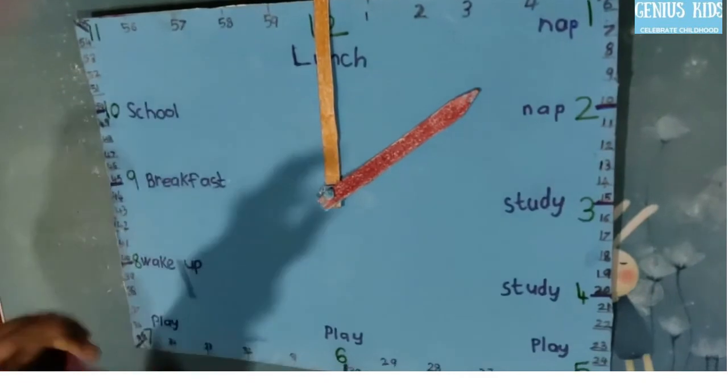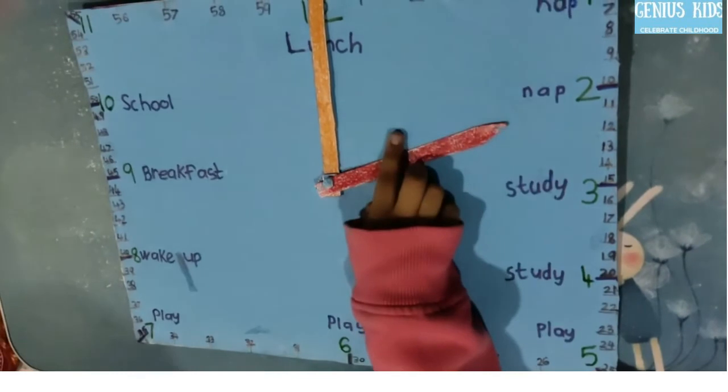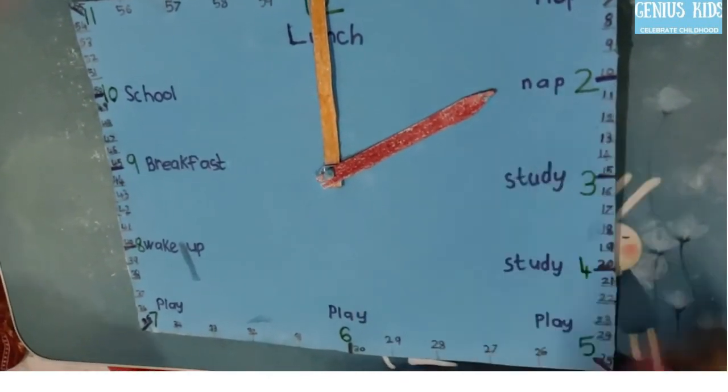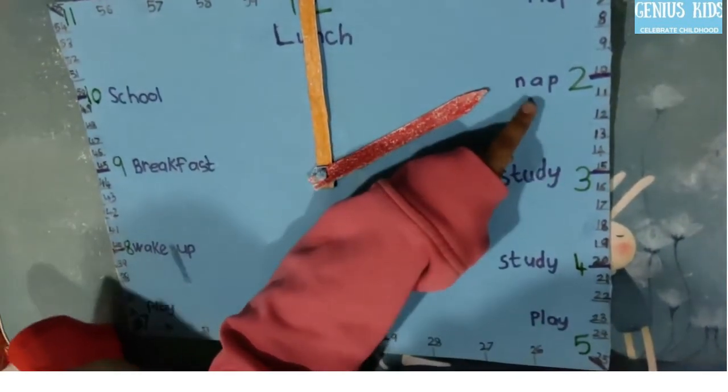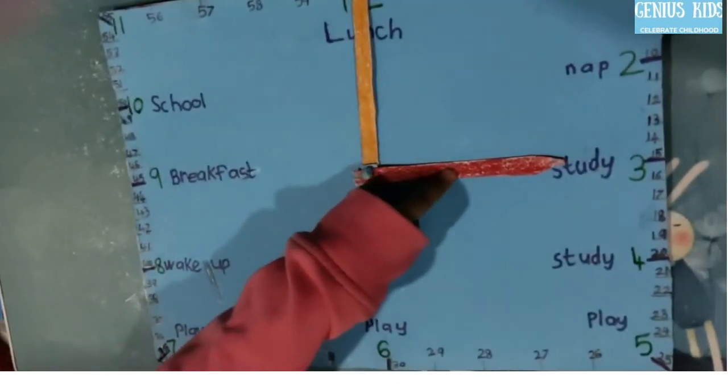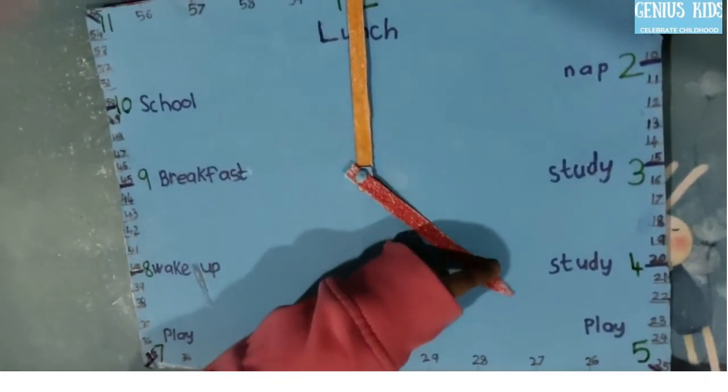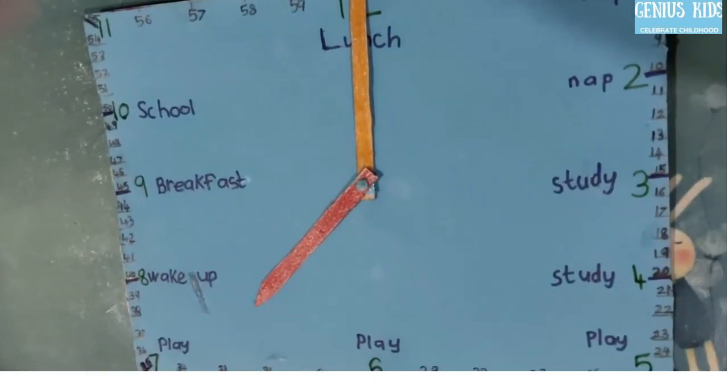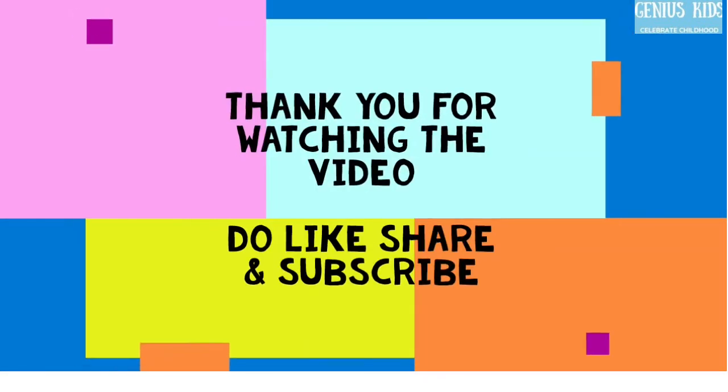Then nap. What is the time? 1 o'clock. Yes. Then time? 2 o'clock. What should you do? Nap. Yes. Next. 3 o'clock study. 4 o'clock study. 5 o'clock play. Play. Play. Play. What is the time? 7 o'clock. Okay. What is the time? Play.